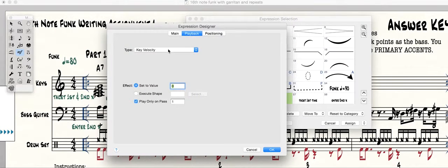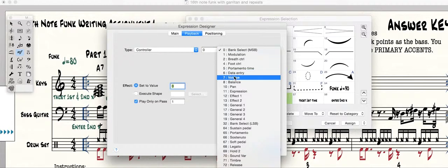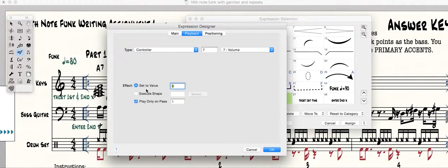The way you would do it with volume is you would go to controller and choose volume number seven, and you would set it to zero for mute. Then when you want it to enter, you'd set it to a number to enter.